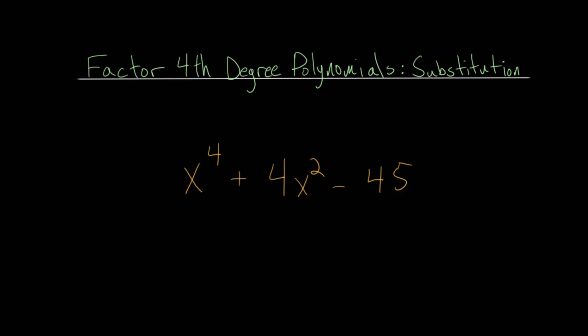The general strategy here is to recognize that this looks like a quadratic. In fact, if we rewrote this, instead of having x^4, we could have (x^2)^2 + 4(x^2) - 45. It might be a little bit clearer.